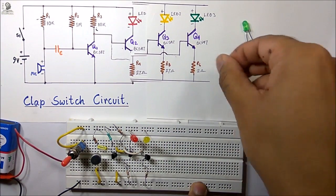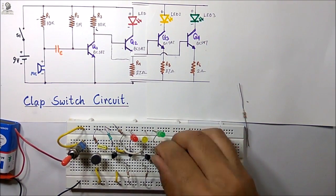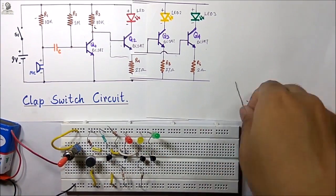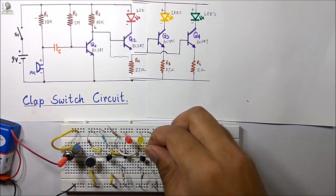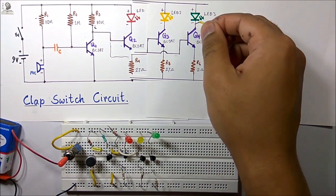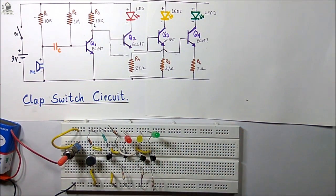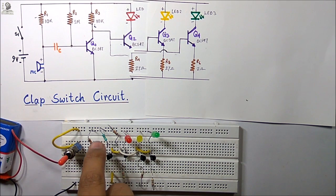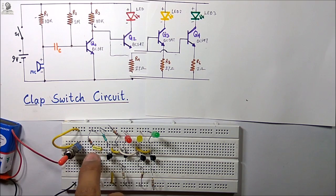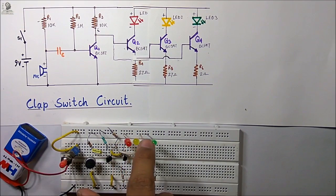In the same way I have to connect the second parallel path. Now I have to connect the base of the Q4 transistor to the collector of Q1. Our Music Rhythm LED Flashlight circuit is now complete. Here you should always use a small capacitance — I have used 100 nF. Now if I play any sound, the LEDs will turn on and off according to the amplitude of the sound.